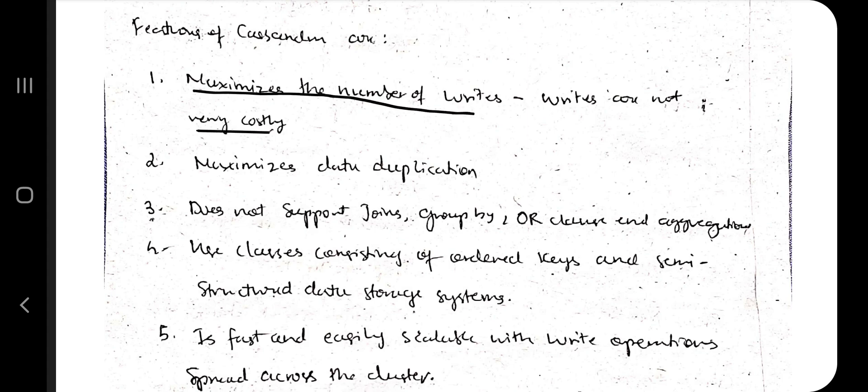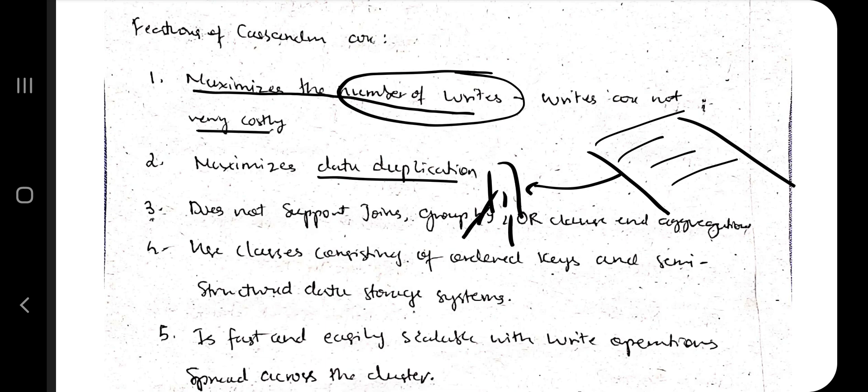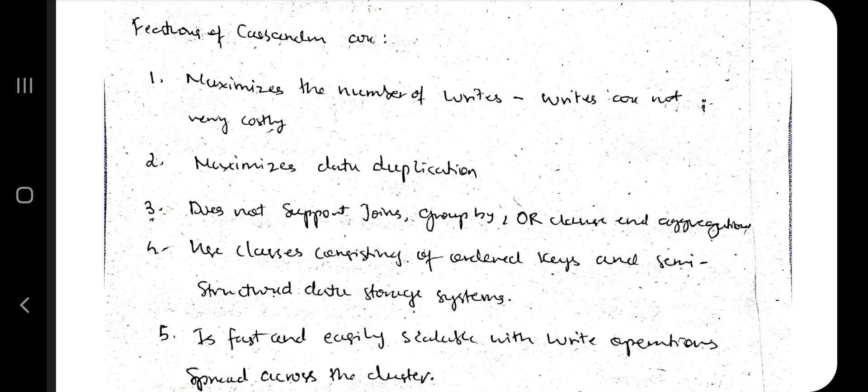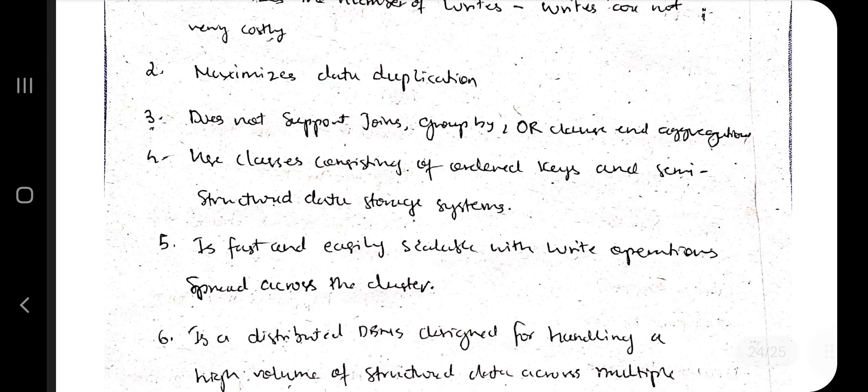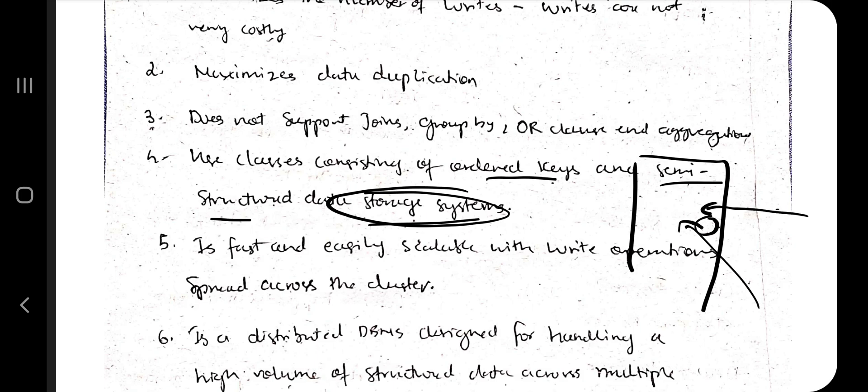How do you relate it? Maximizes the number of writes - he was writing his own answer script. Maximizes data duplication - after he put in the machine it became duplicate and many answers came out. Does not support join, group clause and aggregation - he was writing on his own, no group. It consists of ordered keys and semi-structured data - data storage system is that machine in which people put the answer script, but he clicked replicate many times.